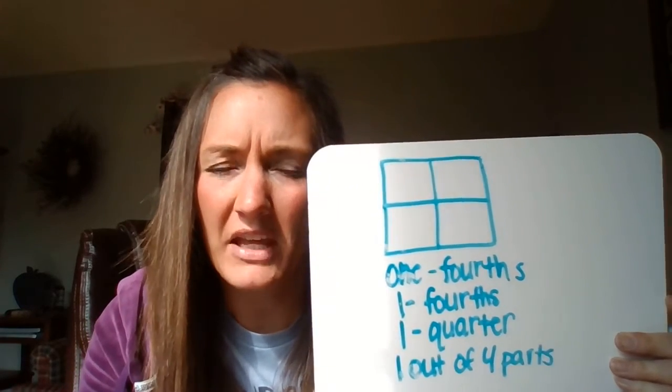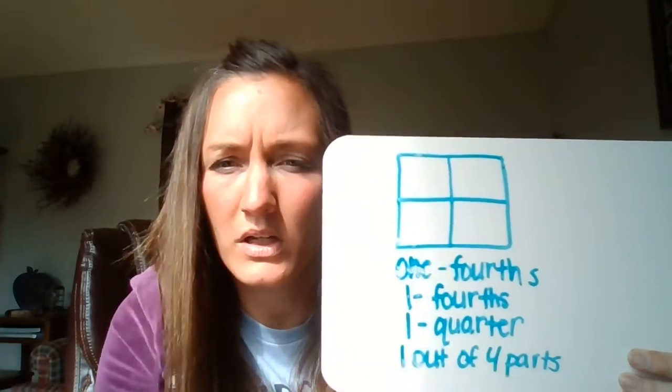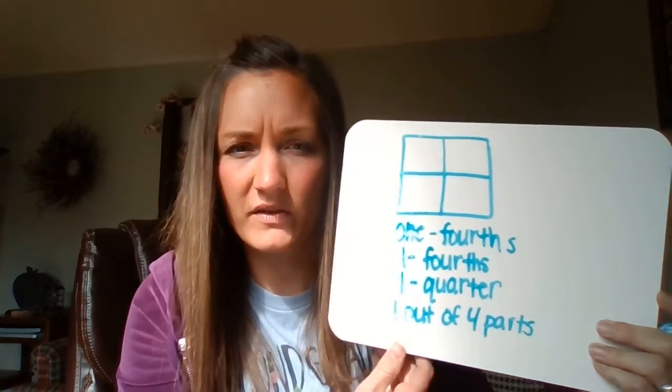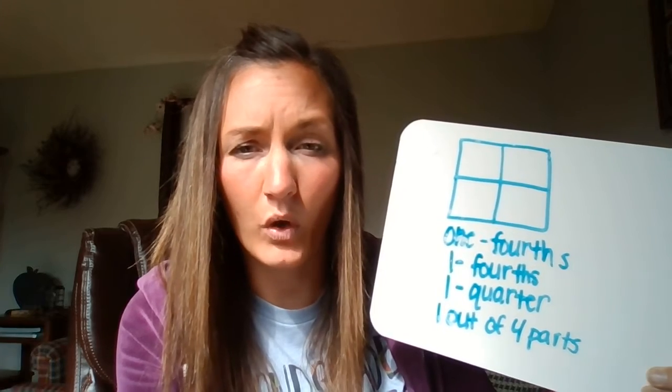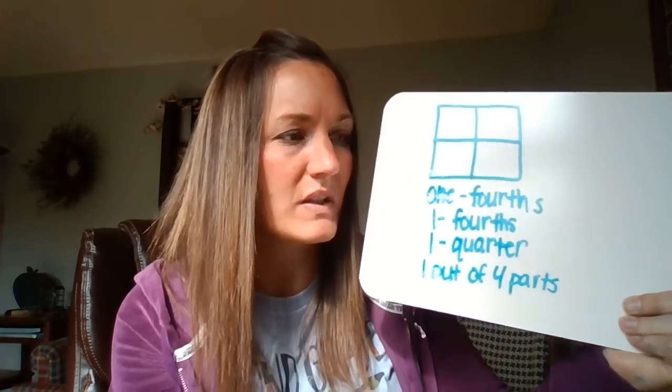Now we're going to look at what it would be if we named all shares using the whole shape. We could say four out of four parts. We could call it one whole. We could call it four quarters. Or I could say four fourths.